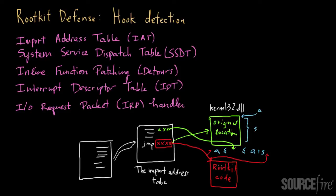A similar approach works for device drivers. The address associated with an IO Request Packet handler is expected to be within the address range of the driver. Moreover, the address associated with the System Service Dispatch Table — the SSDT — is also expected to fall within the range of ntoskrnl.exe, which is the kernel process associated with the system service dispatch table. In many cases, you'll be able to find situations in which the address specified in the hook is not legitimate, and you can use that as a mechanism for identifying the rootkit.